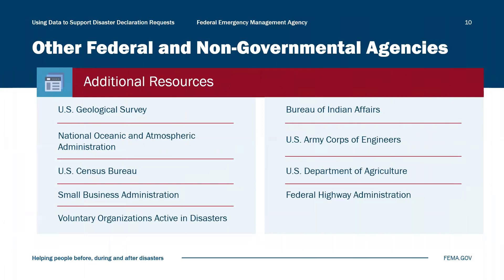In addition to FEMA's resources, SLTT governments should use other credible data sources to support their disaster declaration requests. State and local emergency management agencies collect real-time impact data to help local jurisdictions identify PDA findings; state, local, and tribal nation officials, along with FEMA, then validate the data. For environmental and weather-related disasters, agencies such as the U.S. Geological Survey and the National Oceanic and Atmospheric Administration, or NOAA, provide critical data on flooding, earthquakes, hurricanes, and other hazards.